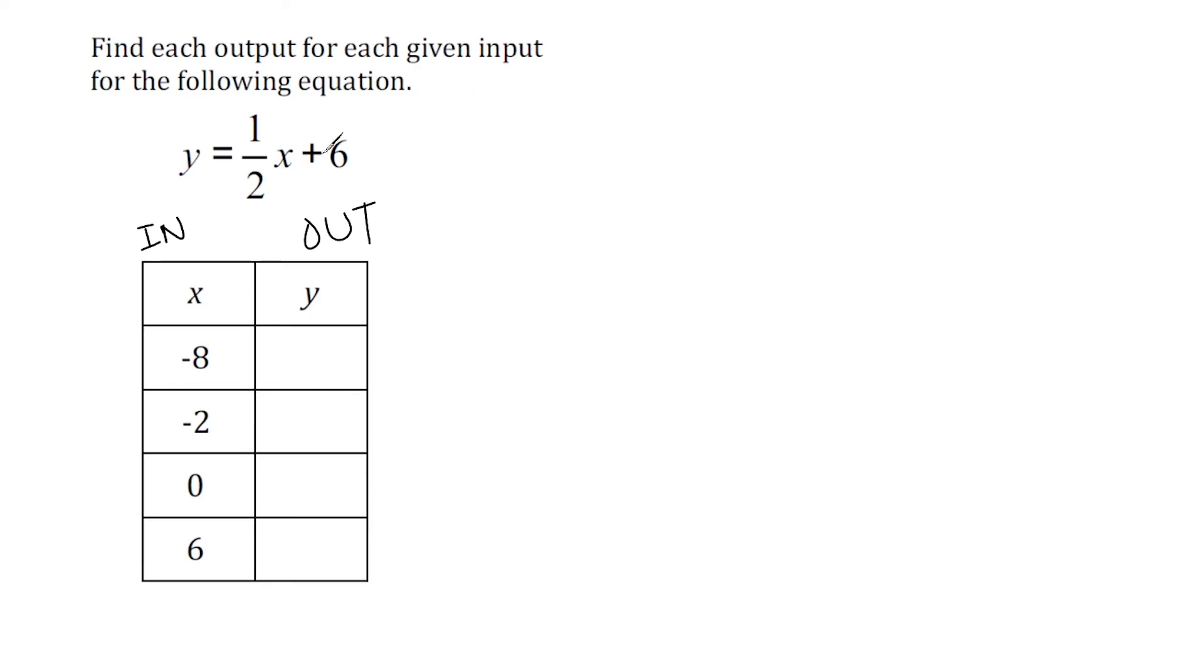So this function rule is telling us that the value of y is going to be equal to taking one half of whatever the x is and then adding 6 to it. So I'm going to start by taking one half of the first x, one half of negative 8. And after taking half of negative 8, we're going to add 6. Now, half of negative 8 is negative 4. And then after we add 6, that's going to give us positive 2. So y is equal to 2 when we have an input of negative 8.